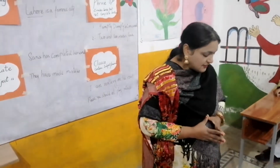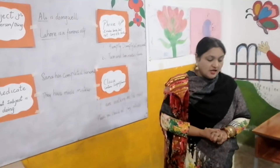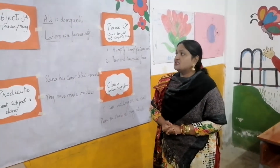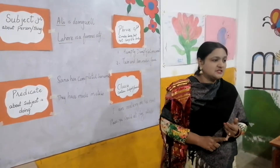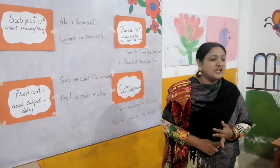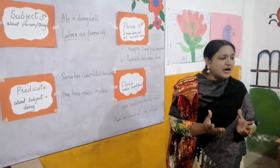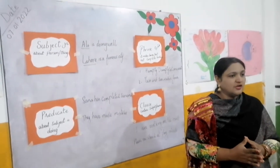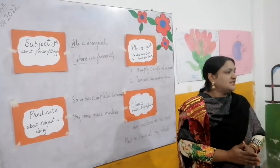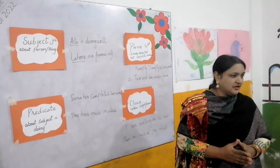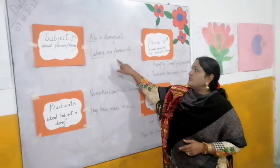I would like to tell you about the definition of subject. It's about who or what the sentence is about. The subject tells us about the person or the thing for which we are talking about. For example, we are talking about 'Noor is a good boy' — in this sentence Noor is the subject.